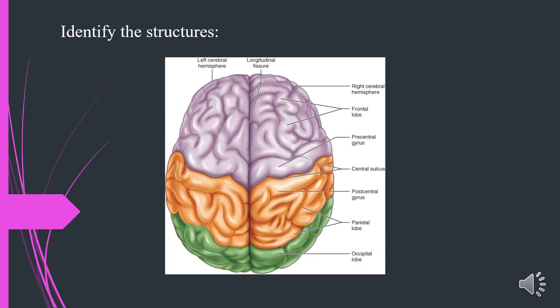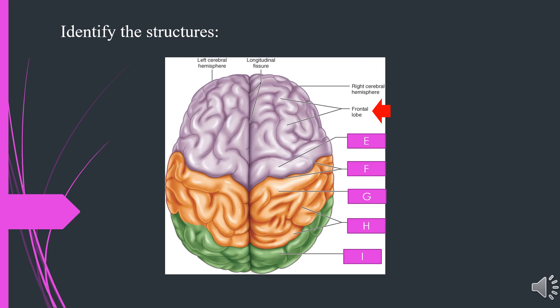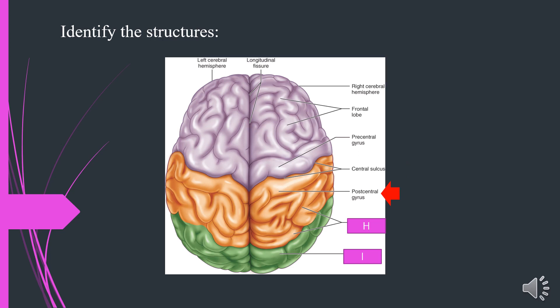Now let's identify a few structures of the brain. A. Left cerebral hemisphere. B. Longitudinal fissure. C. Right cerebral hemisphere. D. Frontal lobe. E. Precentral gyrus. F. Central sulcus. G. Central sulcus. H. Parietal lobe. I. Occipital lobe. Make sure you know all these structures on this image because anything can be on the exam.